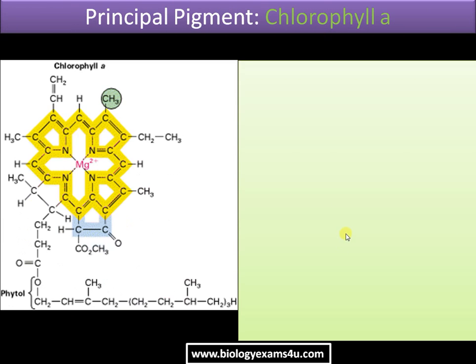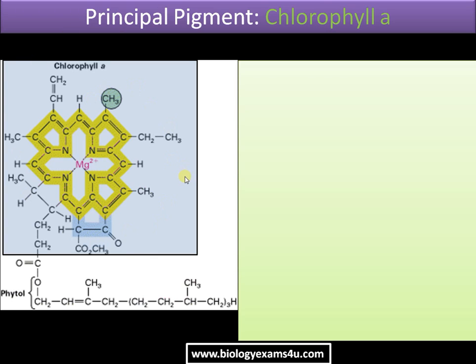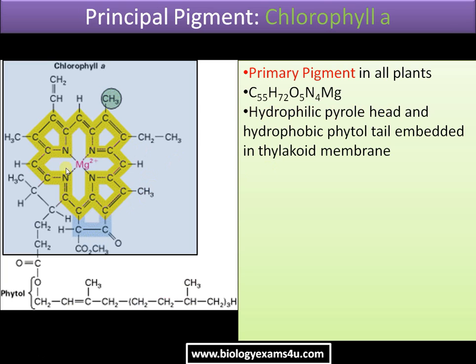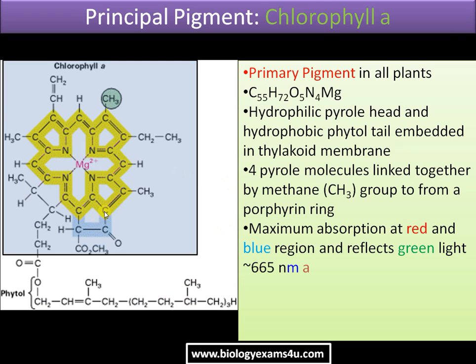Chlorophyll a is the primary pigment in all plants. In its structure you can see a central magnesium atom surrounded by four nitrogen atoms; altogether this structure is called a tetrapyrrole or porphyrin head. The formula is C55 H72 O5 N4 Mg. This has a hydrophilic pyrrole head and a hydrophobic phytol tail that is embedded in the thylakoid membrane. The four rings are joined by methene groups.